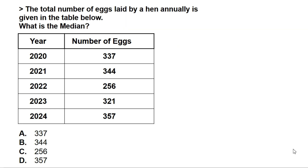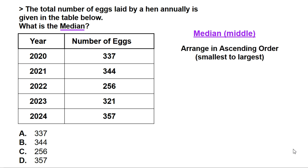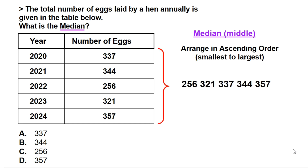In this question, we are asked what is the median. The median is the number in the middle. To get the median, we first have to arrange the numbers in ascending order, which is smallest to largest. So we take the number of eggs in every year and arrange them smallest to largest: 256, 321, 337, 344, 357.